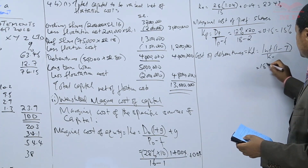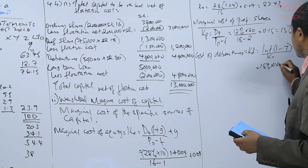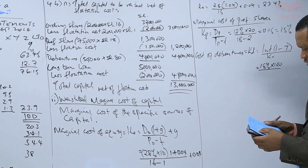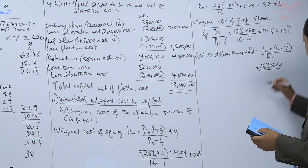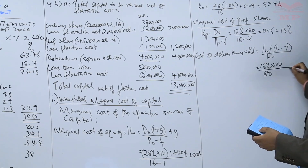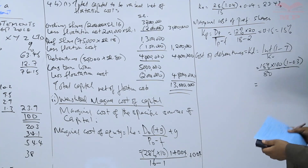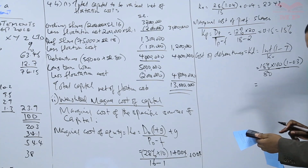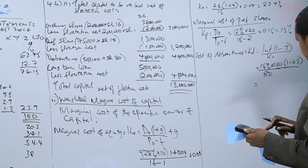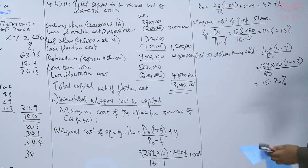The interest here is 18% times the par value of 100 shillings, divided by the market price. The market price is 80 shillings. There are no flotation costs. Applying the corporation tax of 0.3, so 1 minus 0.3 equals 0.7. This gives us: 18% times 100 times 0.7, divided by 80. This is equal to 15.75%. That's the cost of debentures.